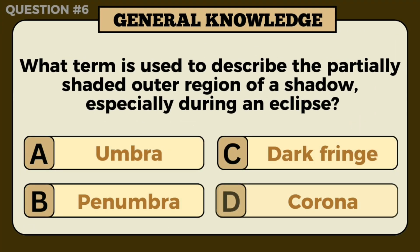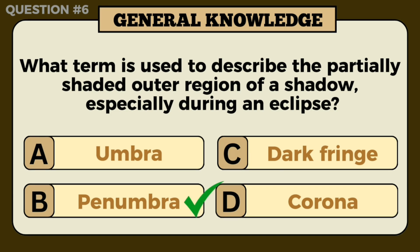What term is used to describe the partially shaded outer region of a shadow, especially during an eclipse? Answer: B — Penumbra.